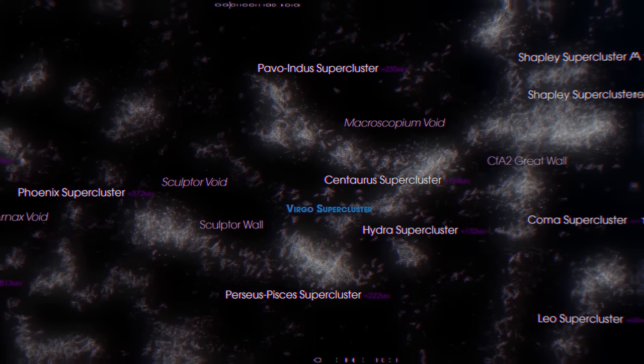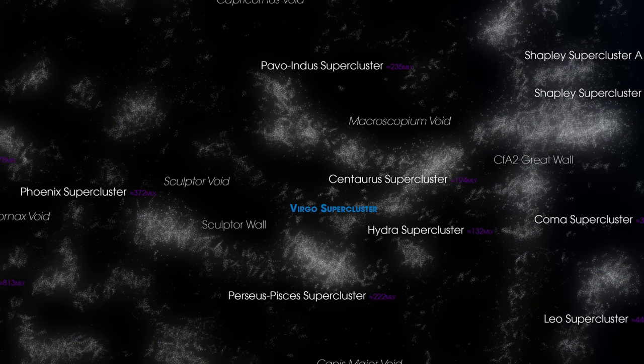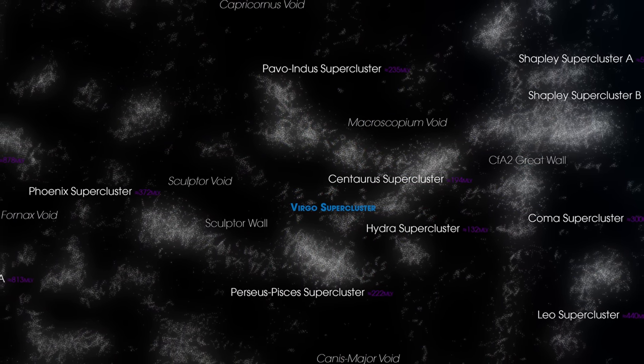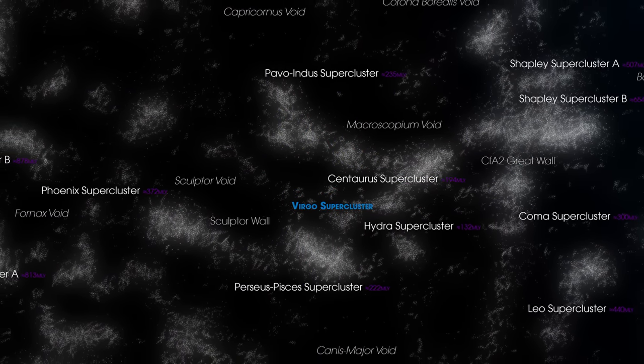Containing the mass of 100 million billion suns, Laniakea is a gravitational masterpiece with galaxy clusters, superclusters, and countless celestial bodies bound in a cosmic web of attraction and motion. At the heart of Laniakea lies the Great Attractor, a mysterious region of space that exerts a massive gravitational pull on the galaxies within this supercluster.